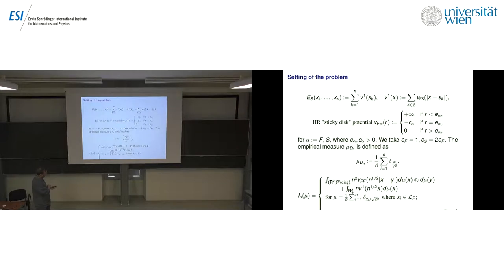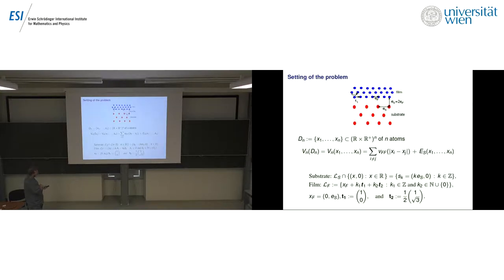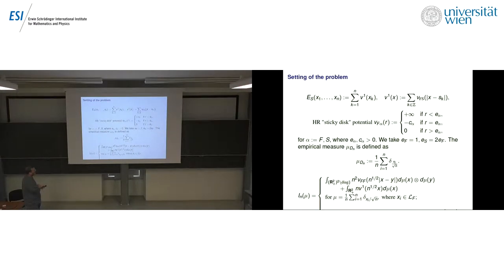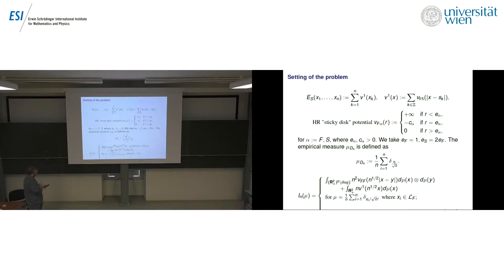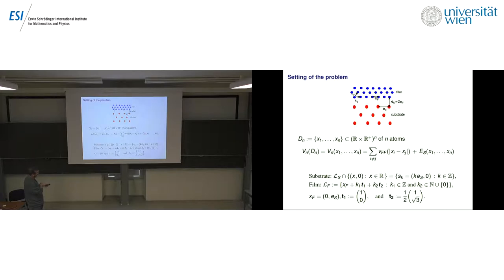This is the Heitmann-Radin sticky disk potential: it is plus infinity if atoms are closer than a threshold, minus C*alpha if the distance is exactly equal to some radius, and zero if larger. We take E_F equal to 1 and E_S equal to 2. To this problem we associate an empirical measure — placing a delta at each atom, scaling the atoms — and define a functional in this framework. The energy of this functional equals the energy of the configuration, so minimizing the empirical measure functional is equivalent to minimizing the discrete energy V_N.